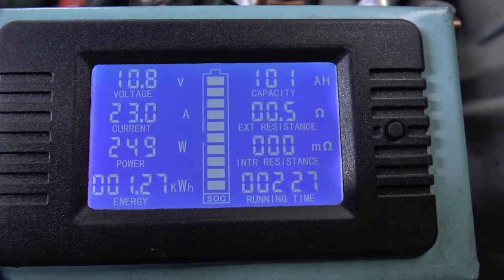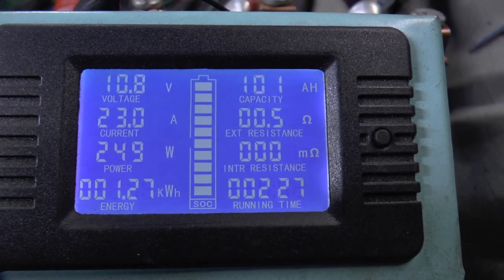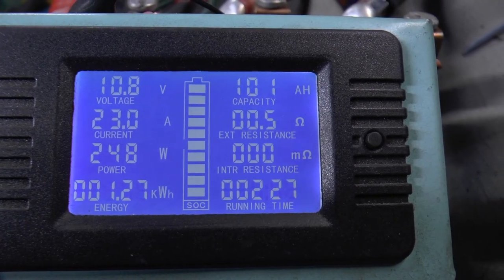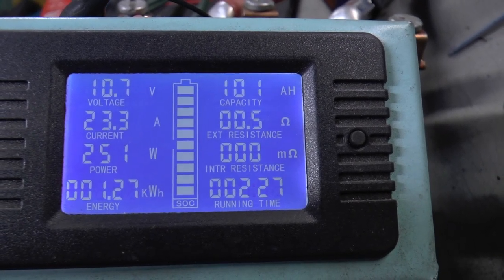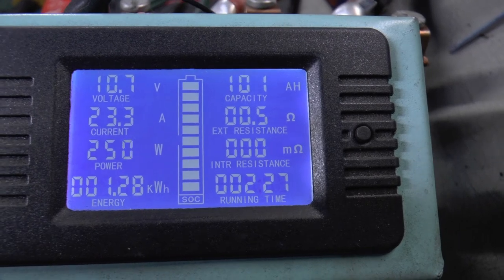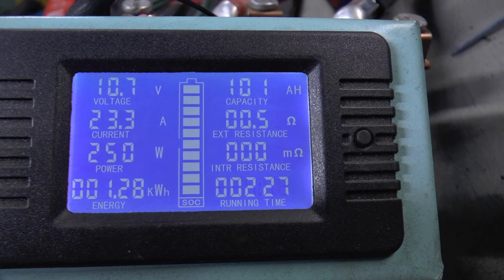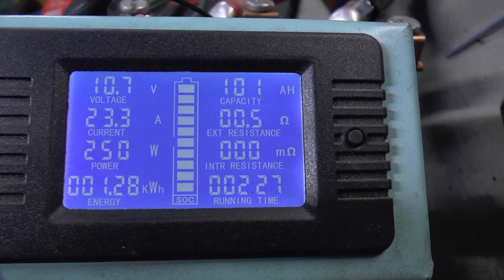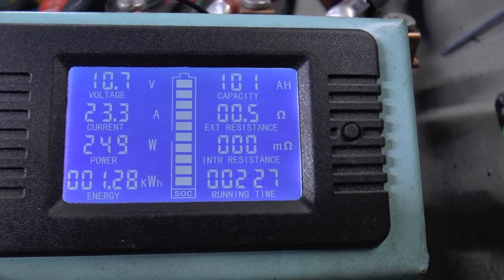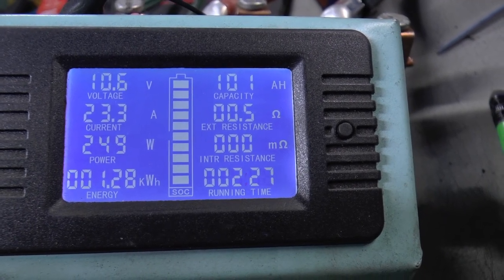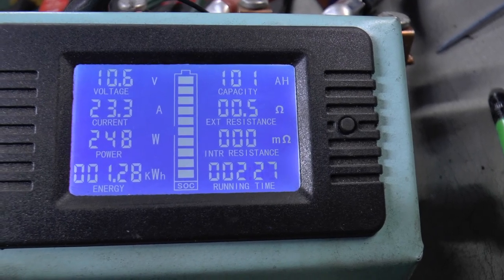10.8 volts. Oh there comes the fan on the Alpha inverter again. I've got the fan off for the heat in here, thought it would be a little quieter, but... 10.7, 10.6. I guess the inverter ought to start beeping here pretty quick.